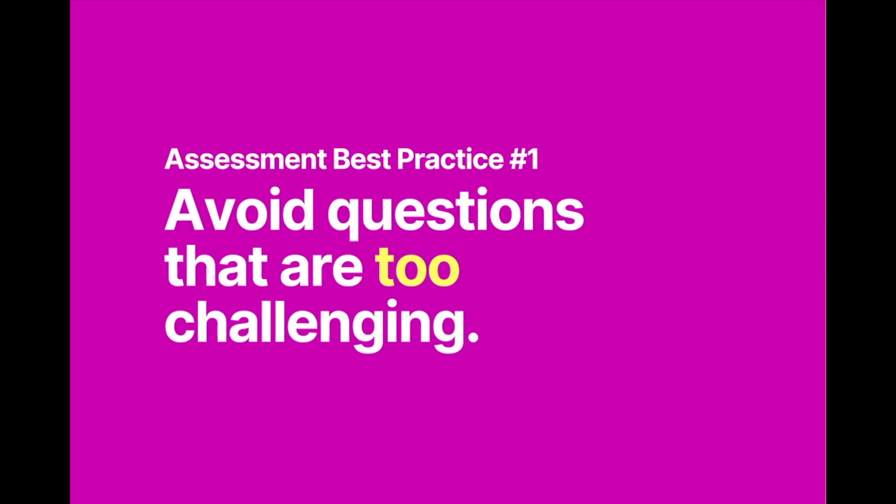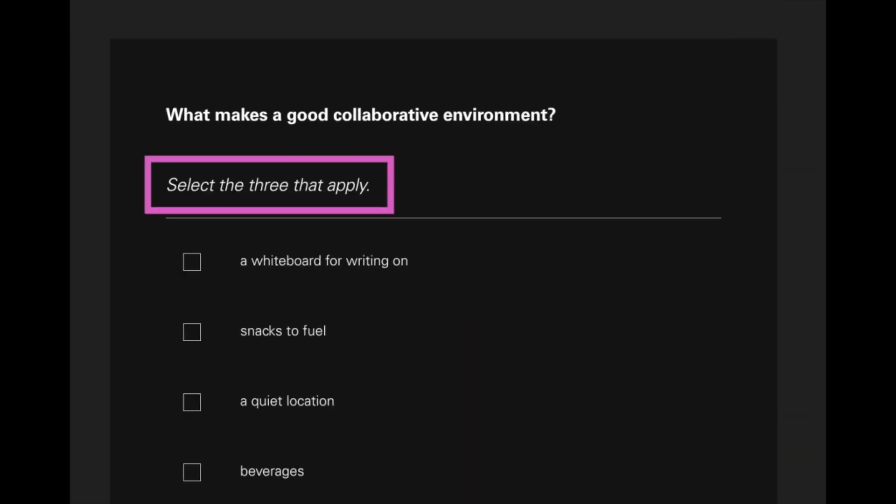Best practice number one: avoid questions that are too challenging. The idea isn't to trick the learner or make it unnecessarily difficult for them to get the question right — we call these gotcha questions. Sometimes a question or activity is rather difficult, so you might need to consider ways to help the learner without giving away the answer. For example, in a multiple response question where the learner can select all that apply, you might use the navigational text to tell the learner exactly how many to select — for example, 'select the three that apply.'